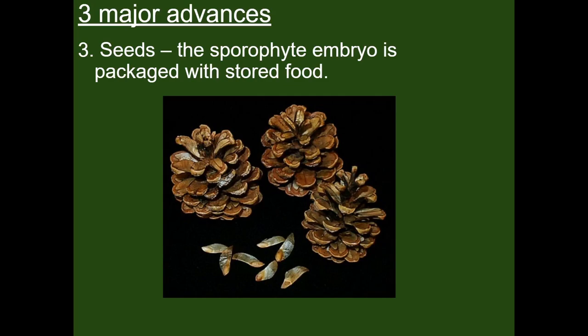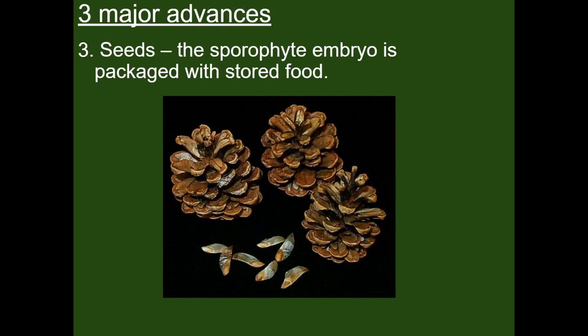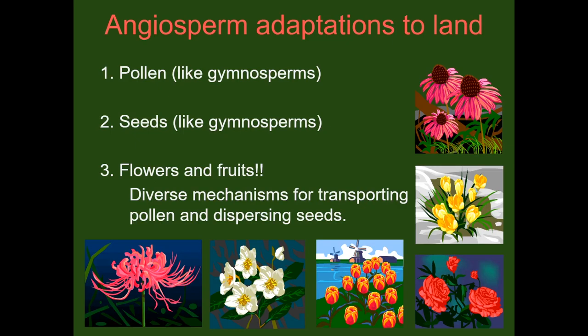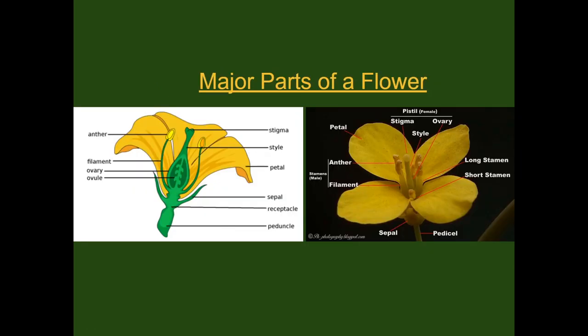Not only do these seeds provide a mechanism for dispersal, but they provide vital nutrients to help the new offspring get a jump start in life, increasing their likelihood of survival. In addition to those adaptations, angiosperms develop flowers. These flowers serve as a colorful beacon to recruit pollinators to help disperse their sperm.